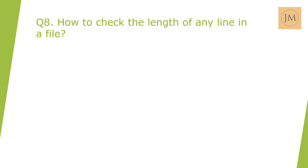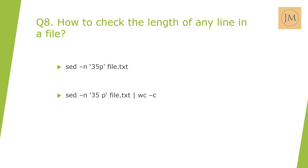Final question: How to check the length of any line in a file? The command `sed -n '35p' file.txt` prints the 35th line of the file. To check its length, pipe the output to word count with the `-c` switch for character count: `sed -n '35p' file.txt | wc -c`. This displays the length of the 35th line.